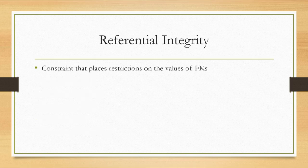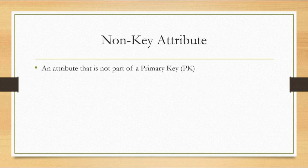Let's talk about referential integrity. Referential integrity means a foreign key must be a primary key in another table. It says that if I have a foreign key in one table, that primary key must exist in the other table that it refers to. A non-key attribute is an attribute that is not part of the primary key. So if I have student ID as my primary key for student, then birth date, GPA, name, and enrollment date are all non-key attributes.